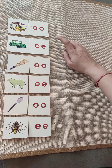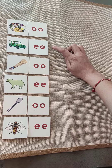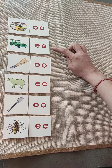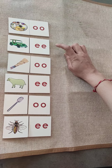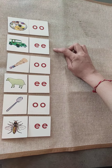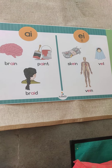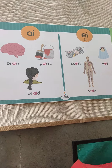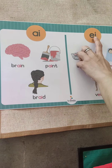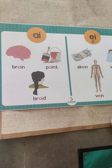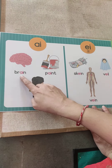We did the revision of long double O and double E sound words. Now, what had we done in the last video? Let us revise those words. When we say AI and EI, what do we hear? AI.